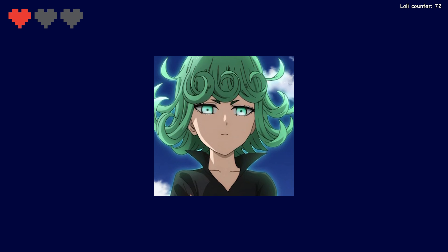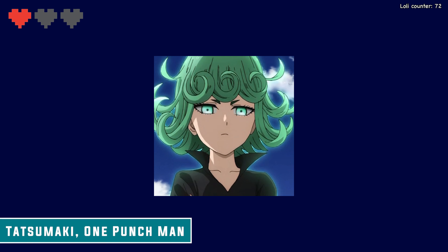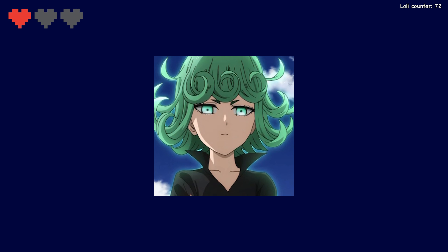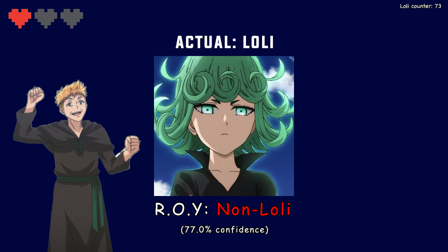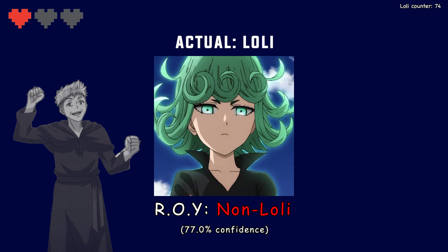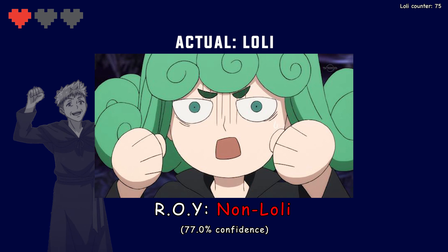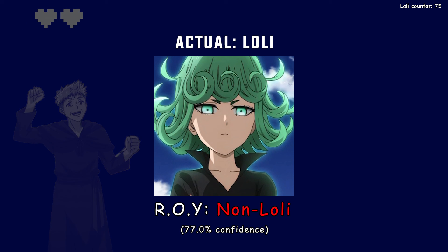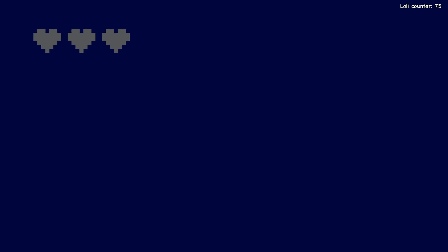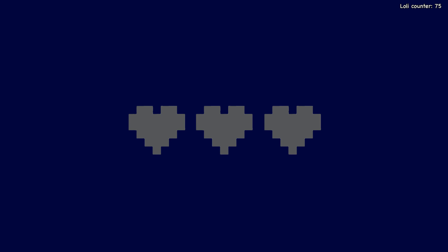The final character is Tatsumaki from One Punch Man. Apparently she's 28, but I think we can all agree she is 100% a lolly. Roy says not a lolly, with only 77% confidence. I can understand Roy's confusion because in this photo Tatsumaki doesn't really look like a lolly compared to some other times in the show — but you gotta account for that, Roy. So that's your final life lost and the challenge failed right at the very end. That hurts. But not nearly as much as a lobotomy.